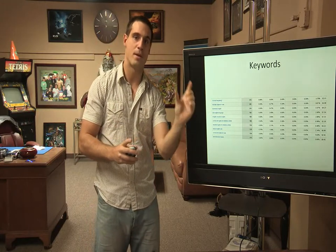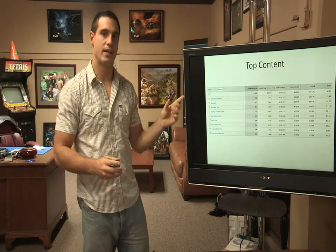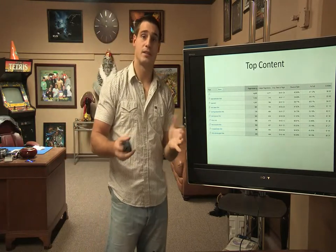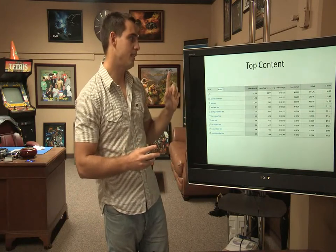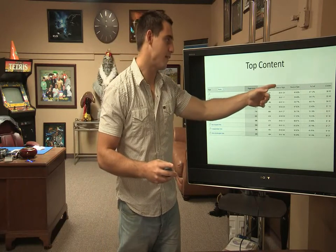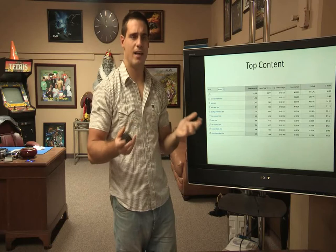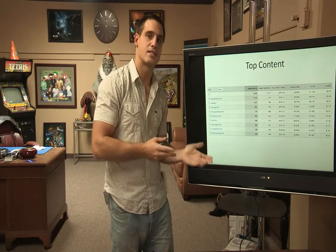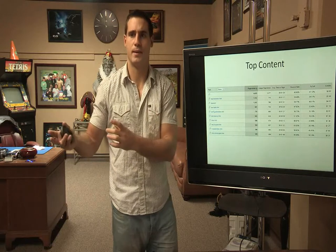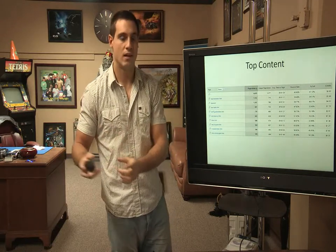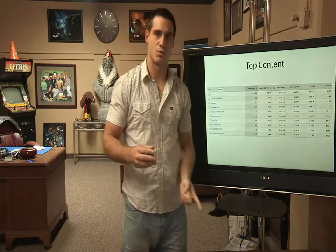Another really good report in Google Analytics is Top Content - the most popular pages on your website. When I look at this I consider three things. The first is the average time on page. It's not necessarily bad if people spend less time on a page, but you want to keep it in mind - why are people spending only 20 seconds on one page but 40 or 50 seconds on another? Nothing is inherently good or bad, but you have to think about why things happen.